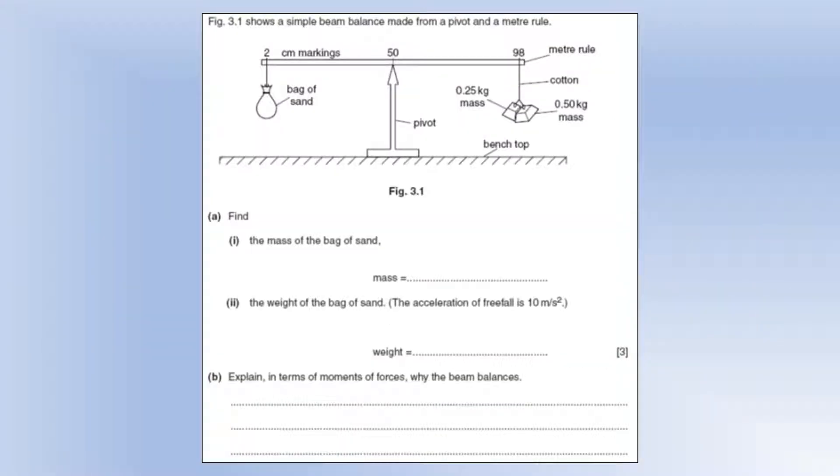This diagram shows a simple beam balance made from a pivot and a meter ruler. We want to find the mass of the bag of sand. You'll notice that both of the objects are 48 centimeters from the pivot. So if this is in equilibrium, they must have equal weight forces and therefore equal masses. So we know it's got to be 0.75 kilograms for the two moments to cancel each other out.